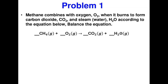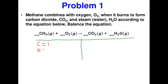The first question gives us a word equation: methane combines with oxygen when it burns to form carbon dioxide and steam — steam being the gaseous form of water. Balance this equation. I start by drawing a table and counting atoms. On the left: carbon = 1, hydrogen = 4, oxygen = 2. On the right: carbon = 1, hydrogen = 2, and oxygen from CO₂ and H₂O combined.